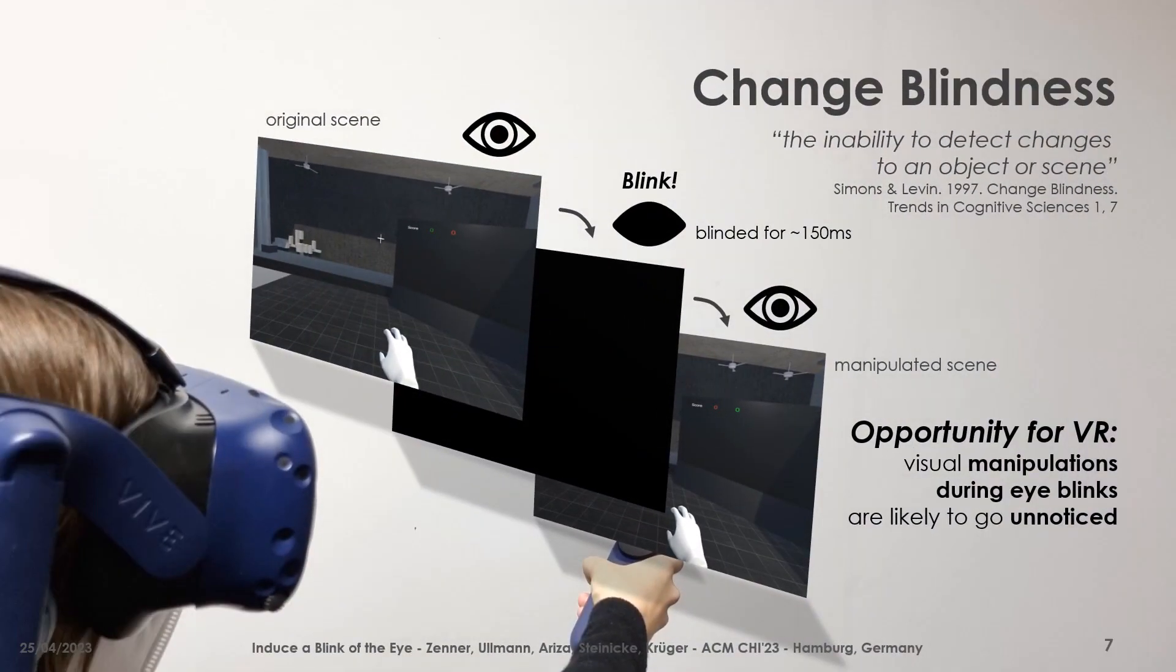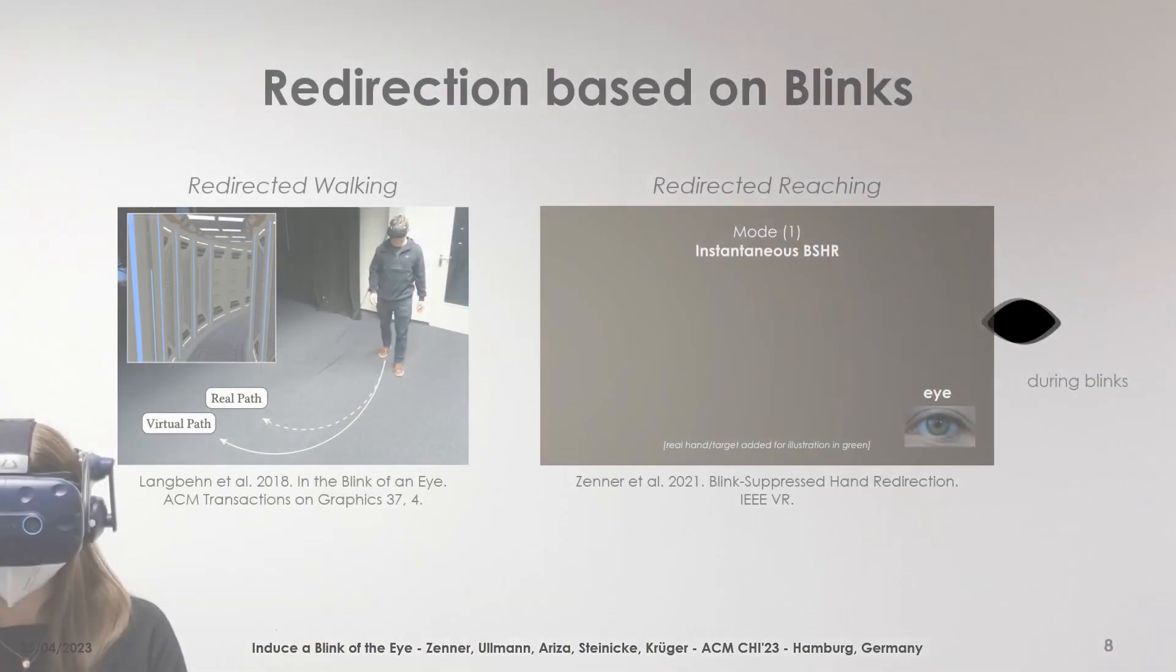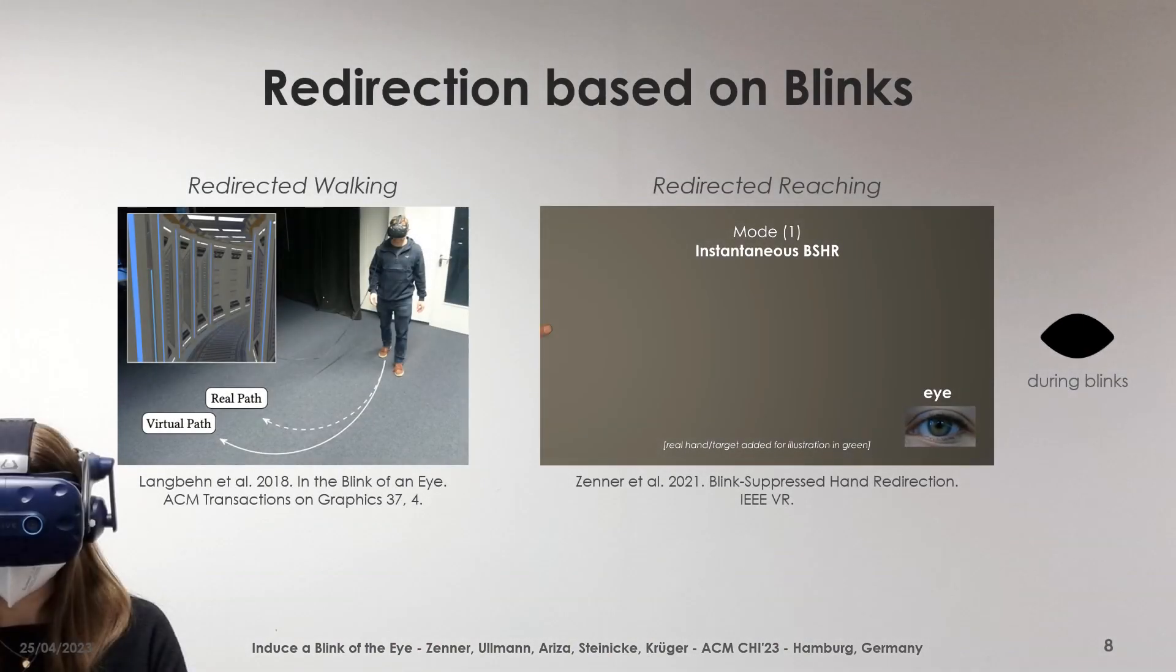Change blindness is a great opportunity for virtual reality to introduce unnoticeable scene manipulations and occurs for example when our view of a scene is briefly occluded, such as during eye blinks, which blind us for around 150 milliseconds. As such, change blindness has seen numerous applications in the past, such as for redirecting the user's walking path and reaching motions.